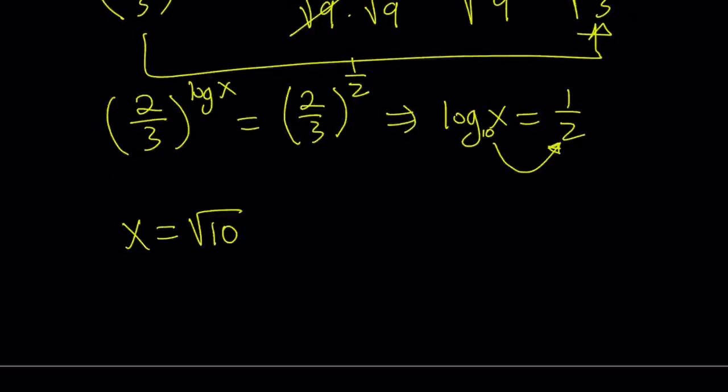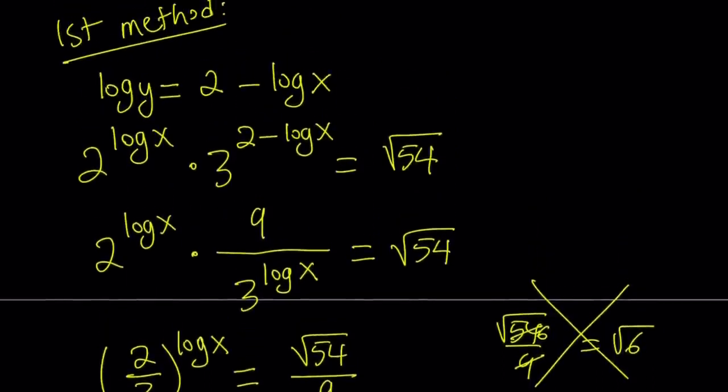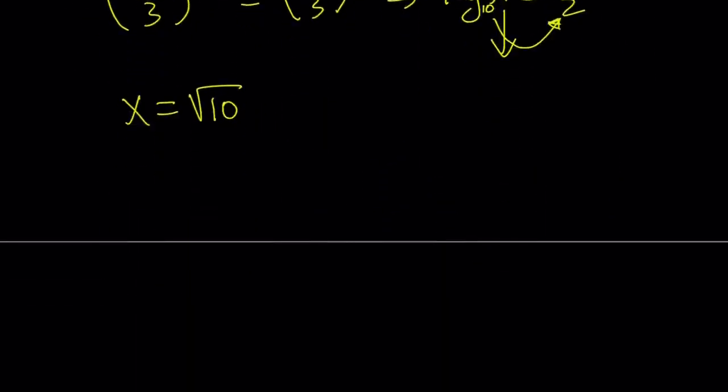And of course, when you plug in log X into the first equation, which tells us log X plus log Y is equal to 2, or you can also use this one, log Y is equal to 2 minus log X. So log Y is going to be 2 minus 1 half, which is 3 halves.